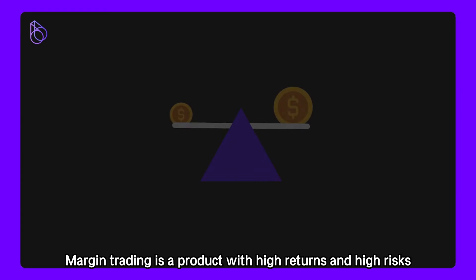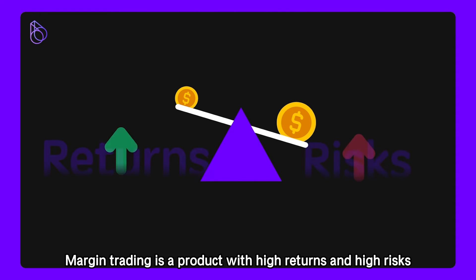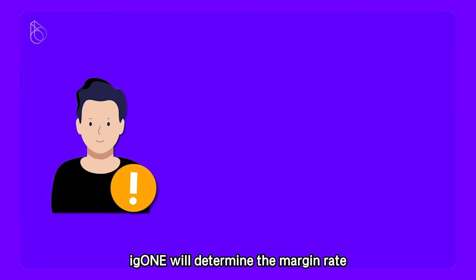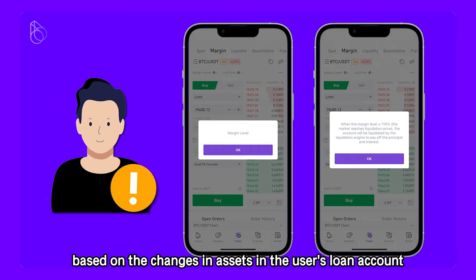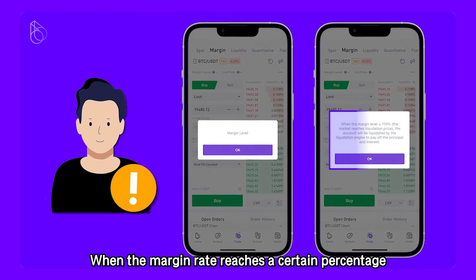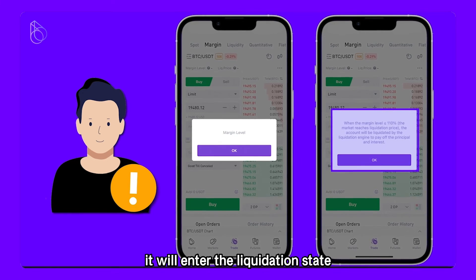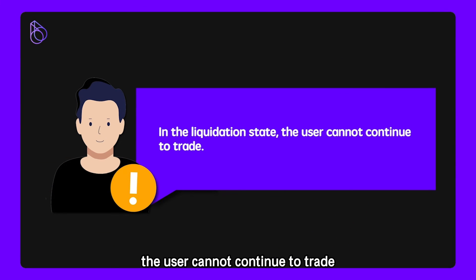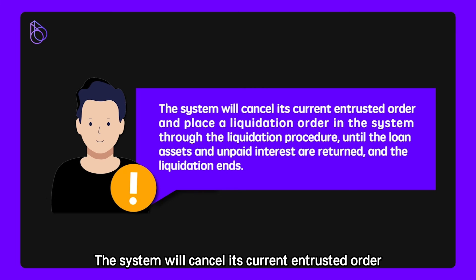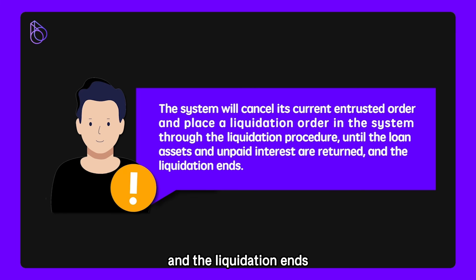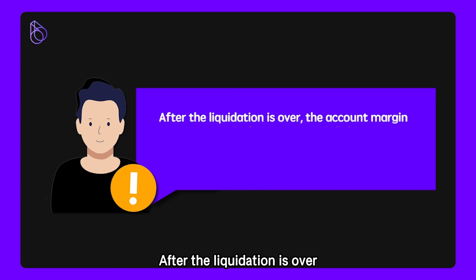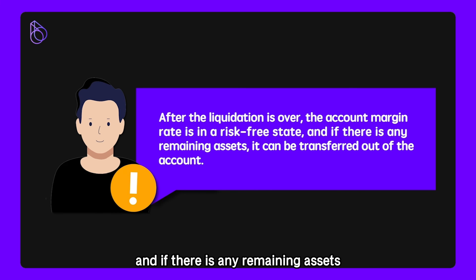Risk Warning: Margin trading is a product with high returns and high risks. When conducting margin trading, BigOne will determine the margin rate and liquidation order based on changes in assets in the user's loan account. When the margin rate reaches a certain percentage, it will enter the liquidation state. In the liquidation state, the user cannot continue to trade. The system will cancel current entrusted orders and place a liquidation order until the loan assets and unpaid interest are returned and liquidation ends. After liquidation is over, the account margin rate is in a risk-free state, and if there are any remaining assets, they can be transferred out of the account.